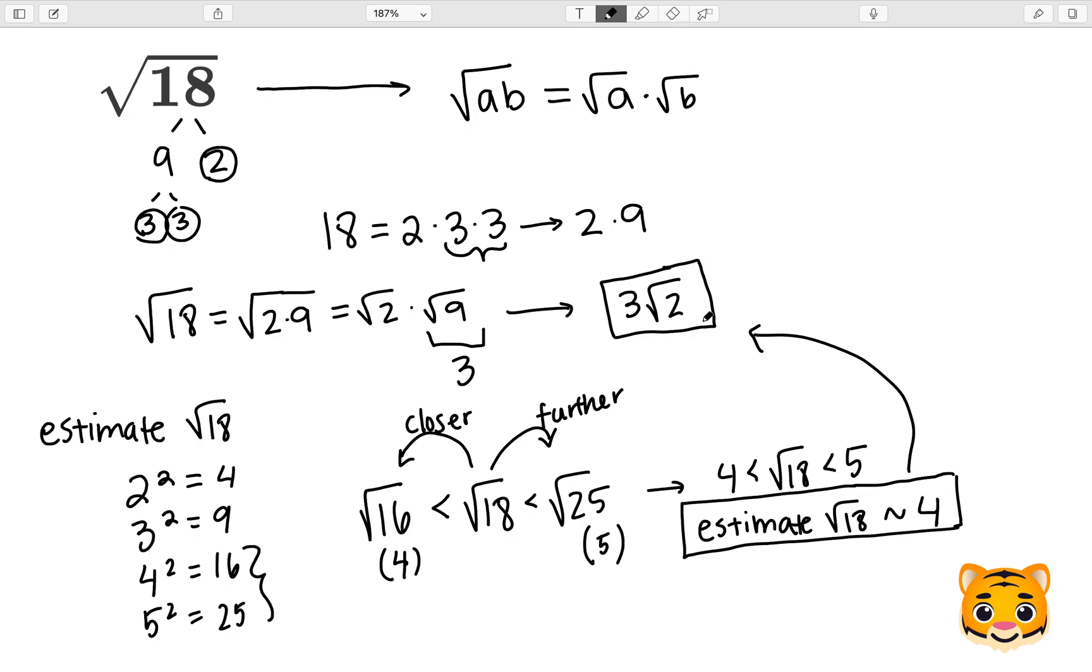And that square root of 2 is 1 point something, because we can see about 4 here is similar to this estimation of 4 here. So either one of these is a good way to estimate or simplify the square root of 18.